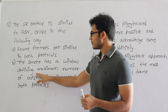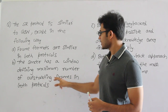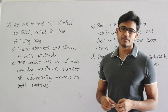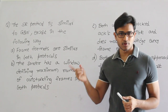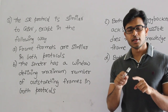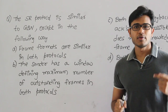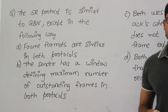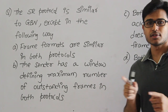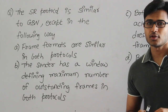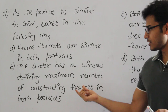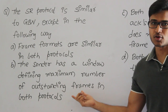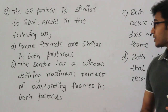The sender has a window defining the maximum number of outstanding frames in both the protocols. Obviously, both are implementations of sliding window protocol. In sliding window protocol, the sender window size always defines the number of packets that are outstanding — meaning you have sent them but are still waiting for the acknowledgement. Please refer to the sliding window protocols concept video for more on this.